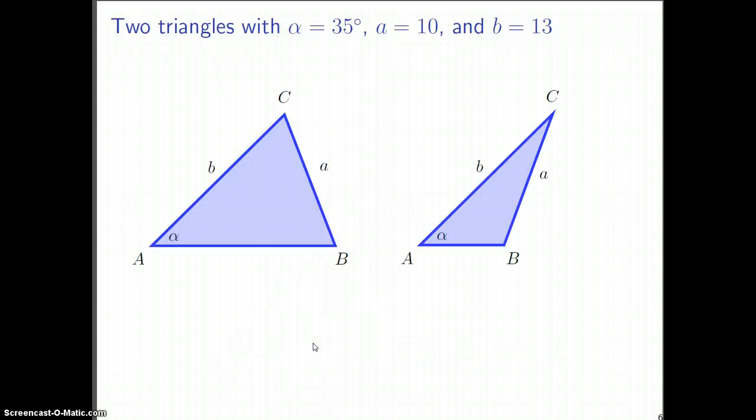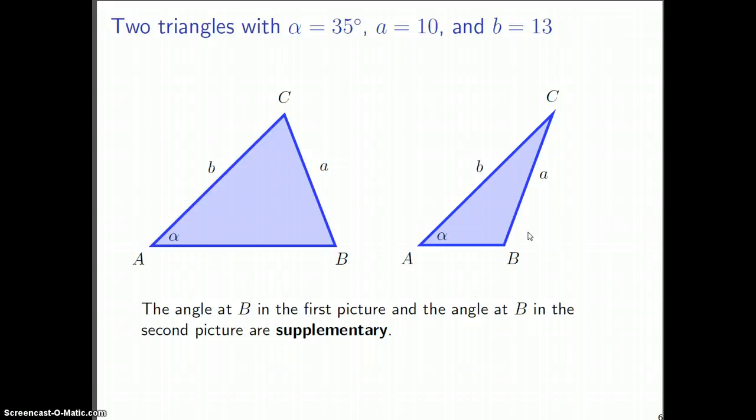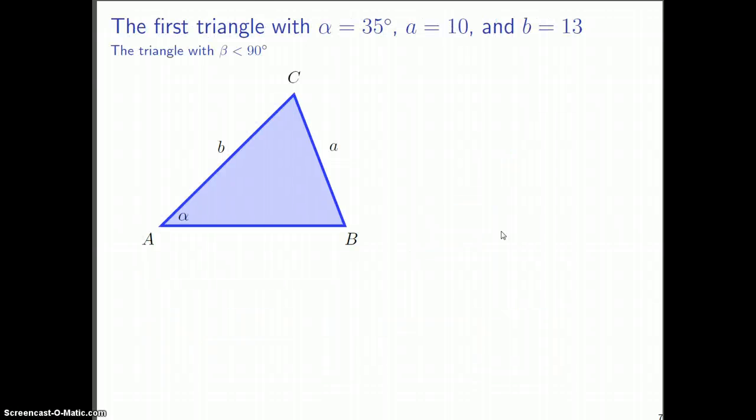Here are our two triangles. The triangle on the left will be the first triangle we study, and here's the second one. Based on what we saw in the previous picture with that yellow isosceles triangle, the angles over here, this first beta angle and this second one, those angles have to be supplementary. They'll add up to 180 degrees.